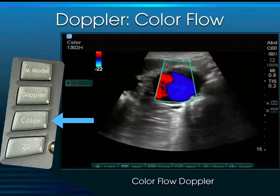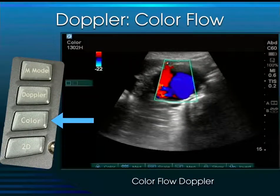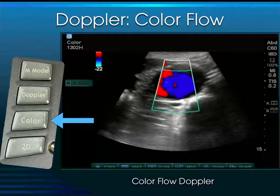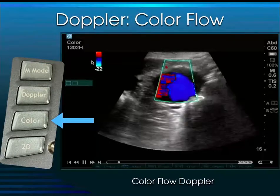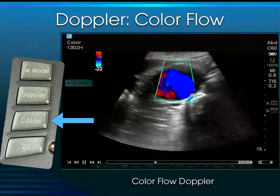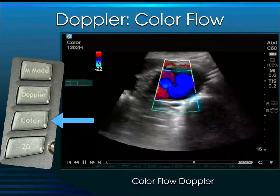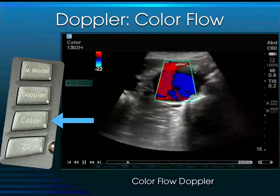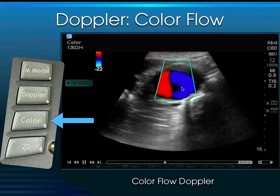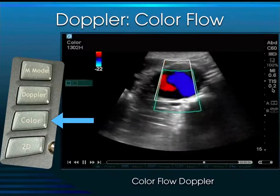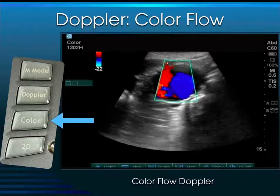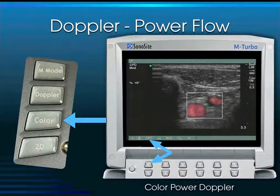Then there's color flow Doppler. Color flow Doppler shows directional flow: red is flow towards the transducer, blue is flow away from the transducer. As seen in this aortic aneurysm, there is turbulent flow going back and forth. Another type is called power flow Doppler or color power Doppler.